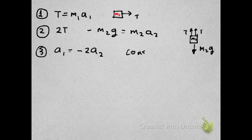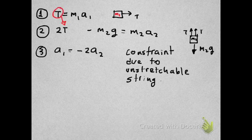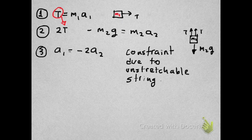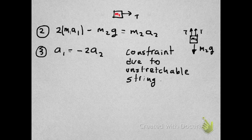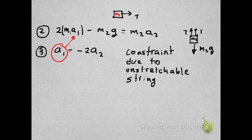So how do we solve these equations? One thing that we can do is use the tension from equation 1 and replace it in equation 2. The tension is M1A1. So instead of writing T, we're going to write M1A1. The next step would be to use the acceleration from equation 3, A1, and plug it in equation 2 in terms of A2. So A1 is minus 2A2. So we can write that there.